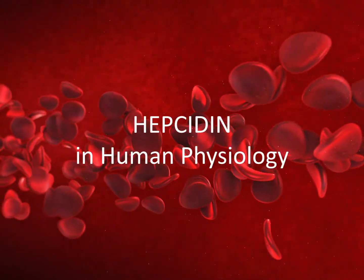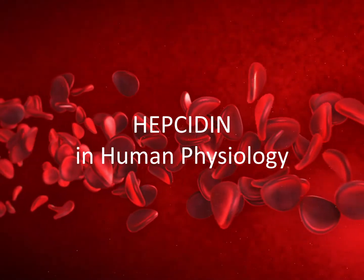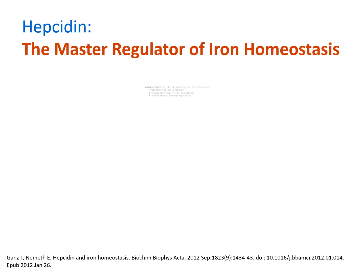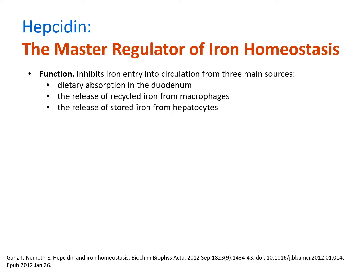What is the role of hepcidin in human physiology? It has been long considered the master regulator of iron homeostasis. Hepcidin functions to inhibit iron from entering circulation by binding ferroportin, the only transporter known to shuttle iron out of storage cells. This action effectively traps dietary iron in the duodenum, recycled iron from senescent red blood cells in macrophages, and the principal site of iron storage, hepatocytes.